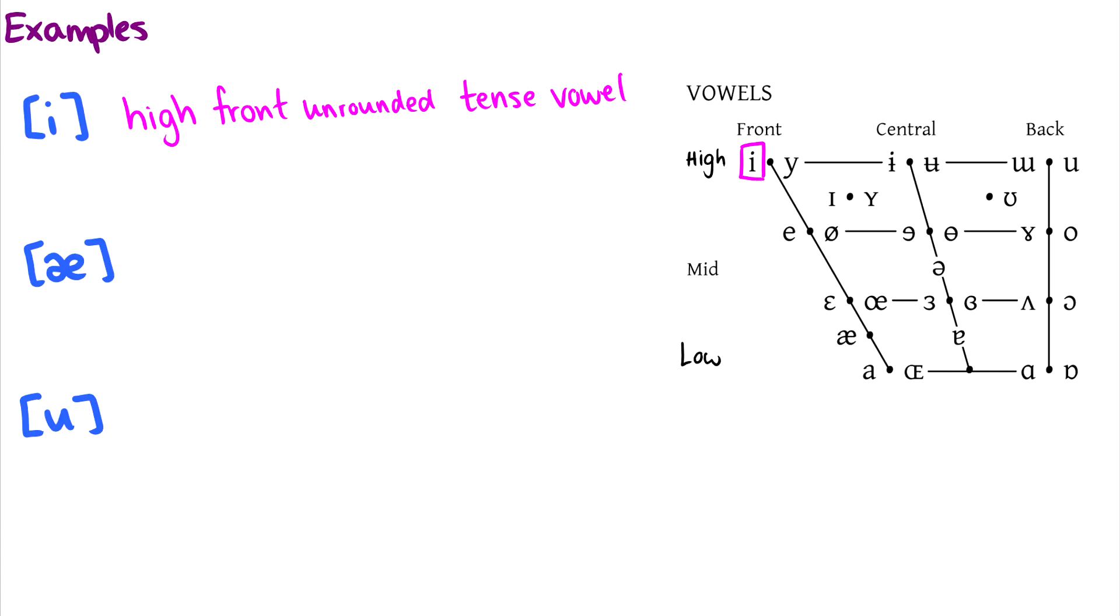I just want to point out that beside it, we have the rounded version. So on the left, it's unrounded. On the right, it's rounded. So just like we have the voiceless-voiced distinction in the consonants, we have the unrounded-rounded distinction presented in the same way.